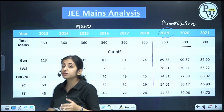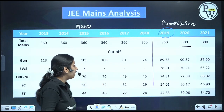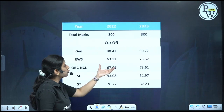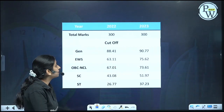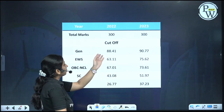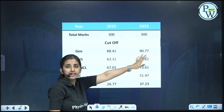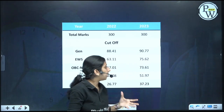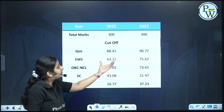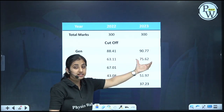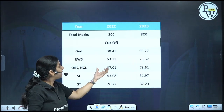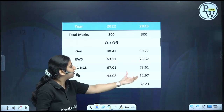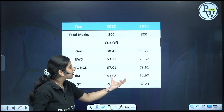That was the analysis from 2013 to 2021. For the last 2 years: the General cutoff is again 88 and 90, so it is around 90. EWS is 63 and 75. OBC is 67 and 73. SC is 43 and 51. ST is 26 and 37.